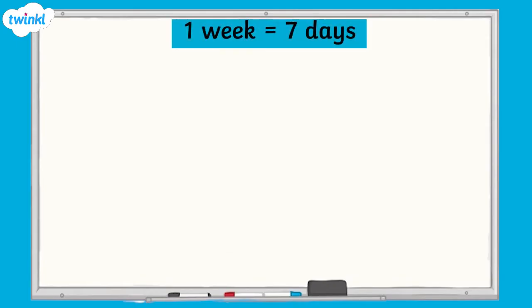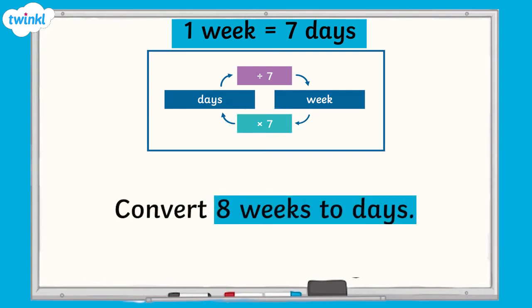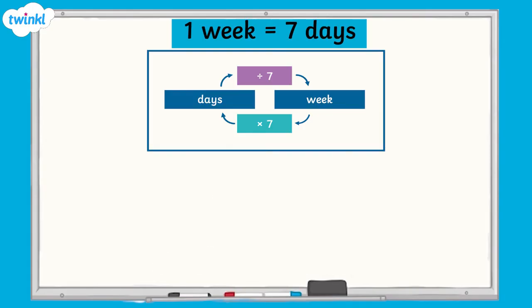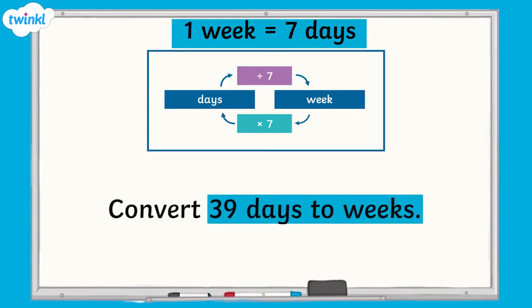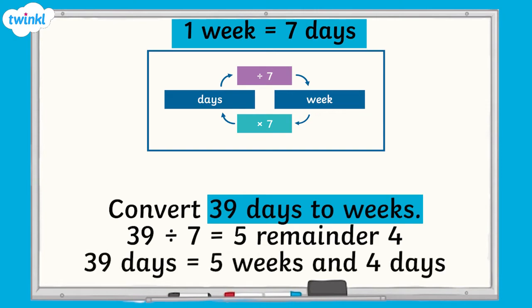Now let's take a look at how to convert between days and weeks. We already know that there are 7 days in a week. To convert from weeks to days, we would multiply the number of weeks by 7 to give us a total number in days. For example, to convert 8 weeks to days, we would multiply 8 by 7, which equals 56 — so 8 weeks equals 56 days. To calculate how many weeks there are in a number of days, divide the number of days by 7. If there is a remainder, this becomes days. For example, to convert 39 days to weeks, we divide 39 by 7, which equals 5 remainder 4. So 39 days equals 5 weeks and 4 days.